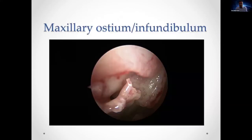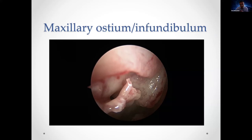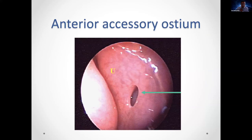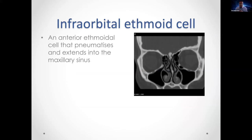Looking laterally with a 30-degree scope, many people mistake what they see for the natural maxillary ostium. In fact, with a 70-degree scope you can see that is an accessory ostium — the natural ostium is always hidden by the uncinate process. After performing a backbite or infundibulotomy of the uncinate, you can see the natural ostium behind it. You cannot do a proper middle meatal antrostomy until you've removed the uncinate.